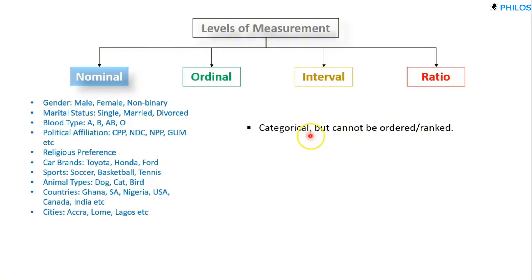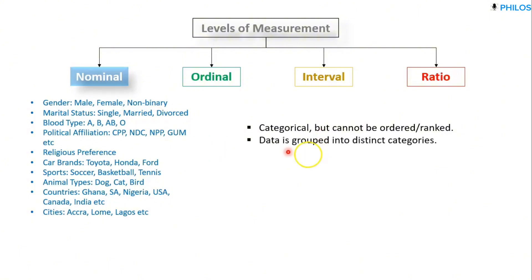These categories are categorical, but you cannot rank them. You cannot say female has more quality than male or male has more quality than female — if you say that, that's your personal opinion and you cannot impose that ranking on everyone to accept. When we say five is greater than two, everyone in the world will accept that, but for these qualities we do not rank them.